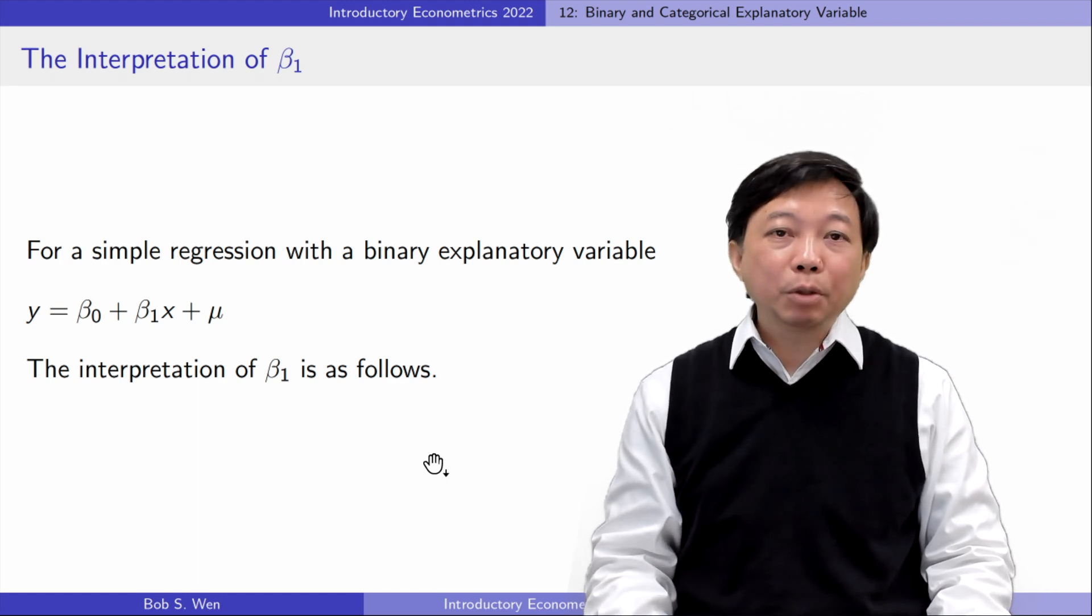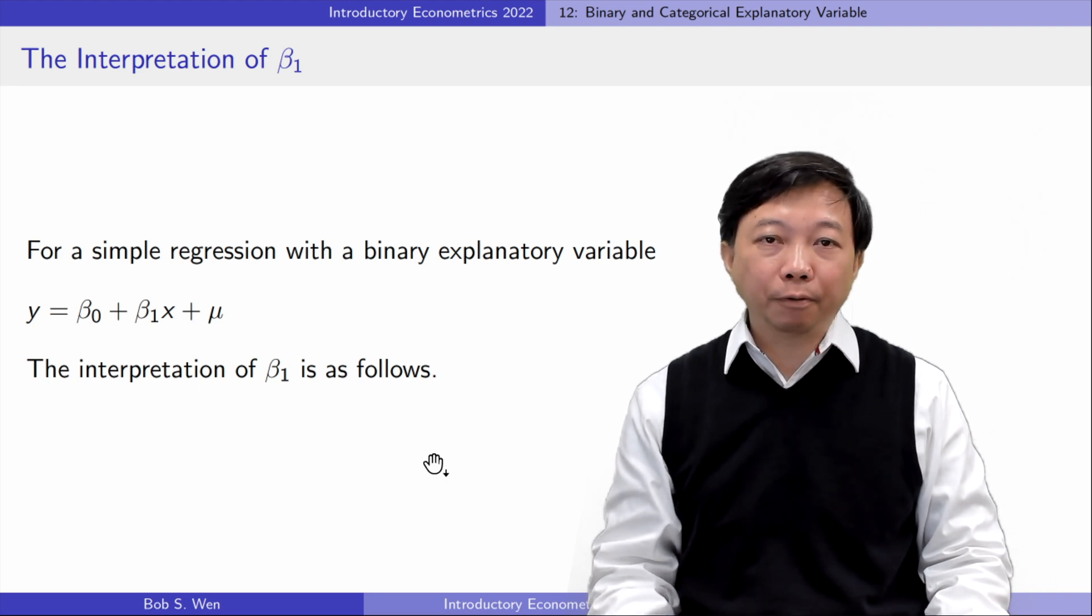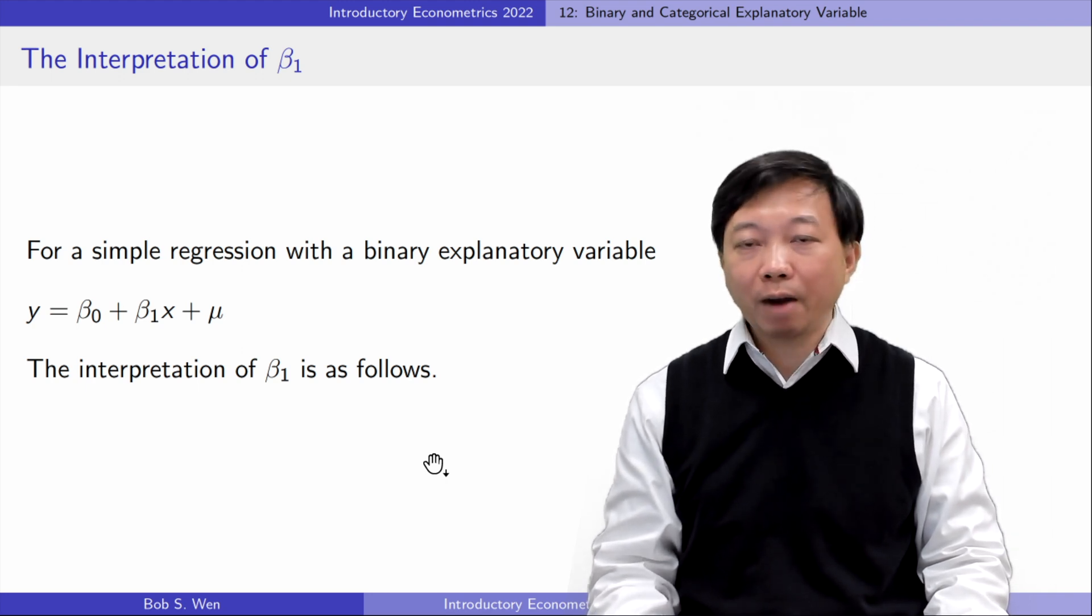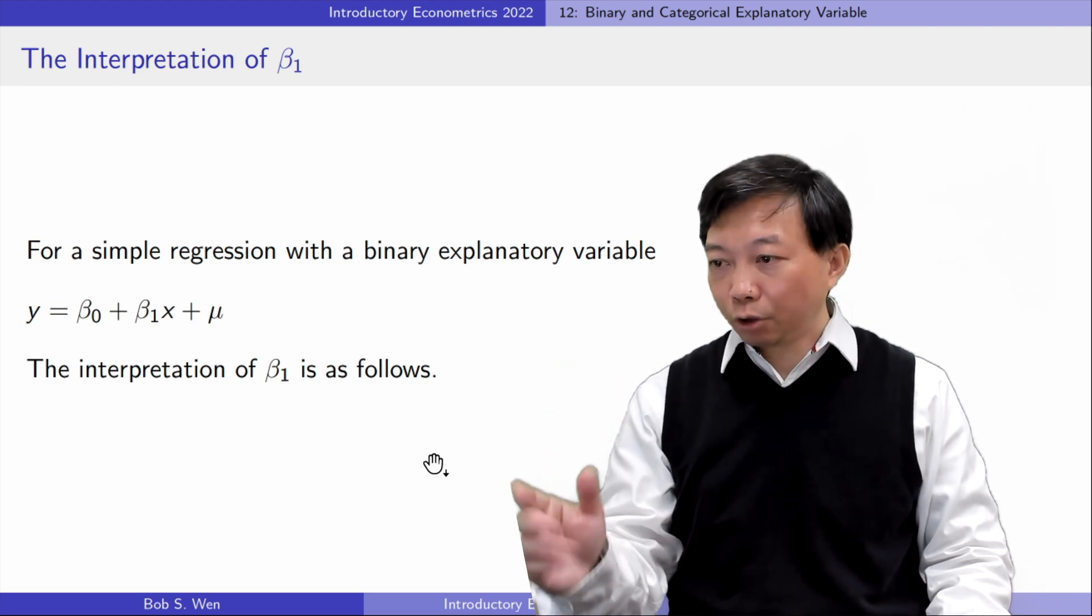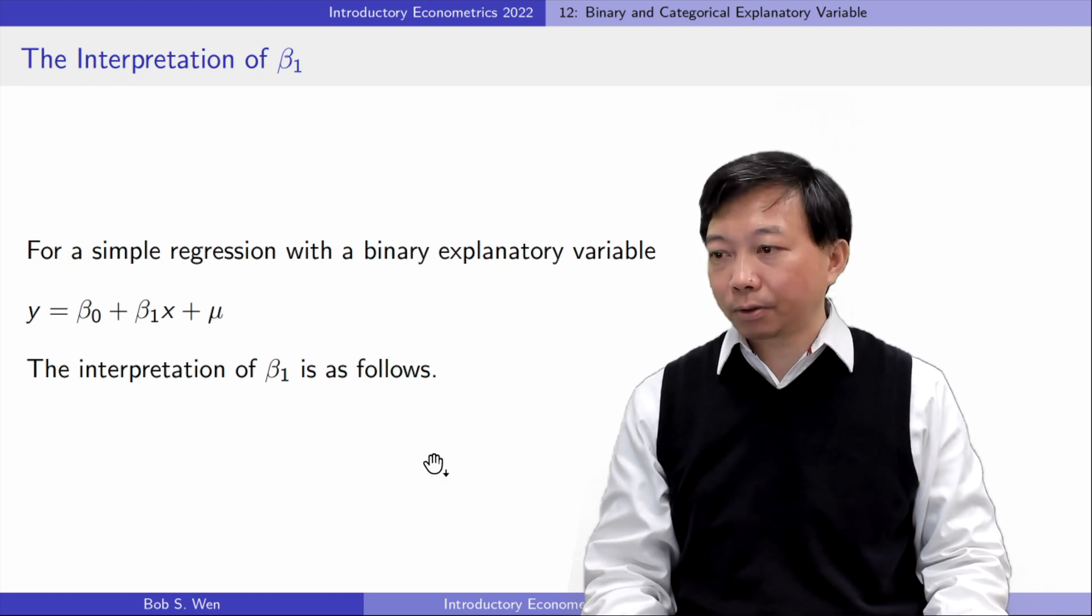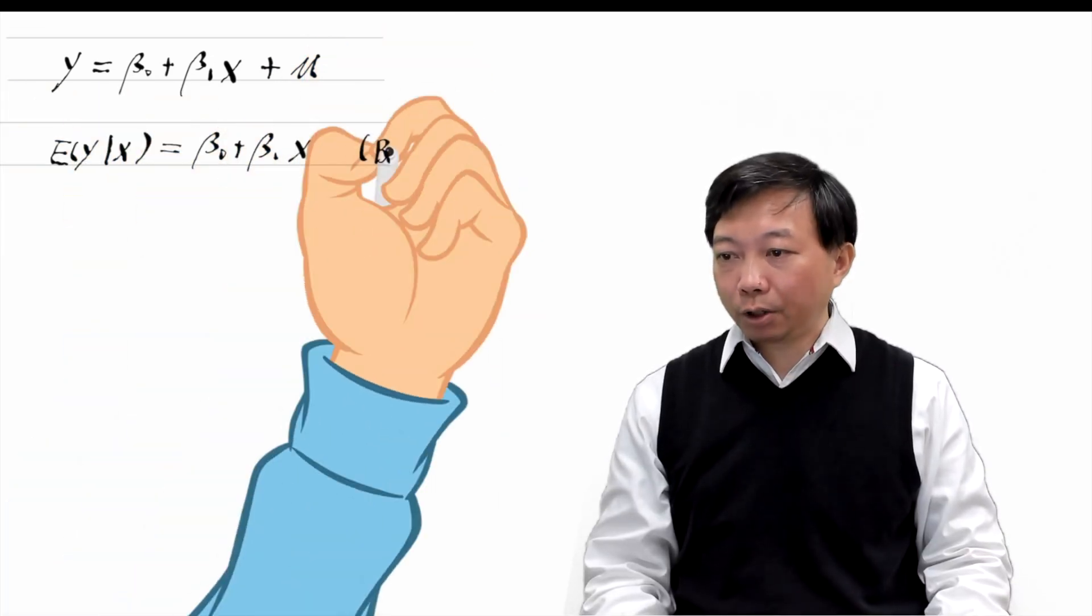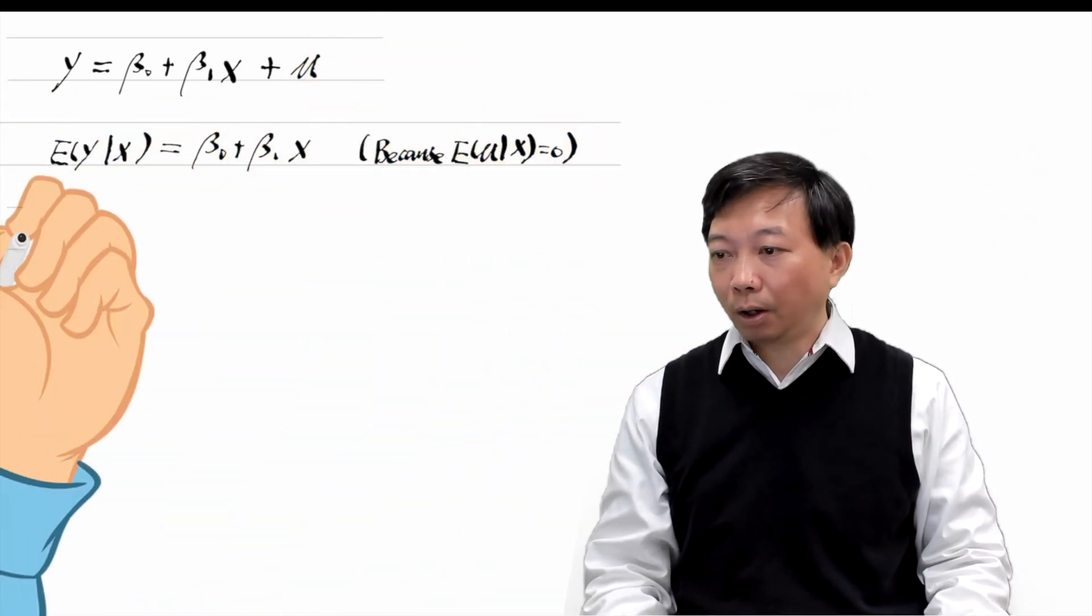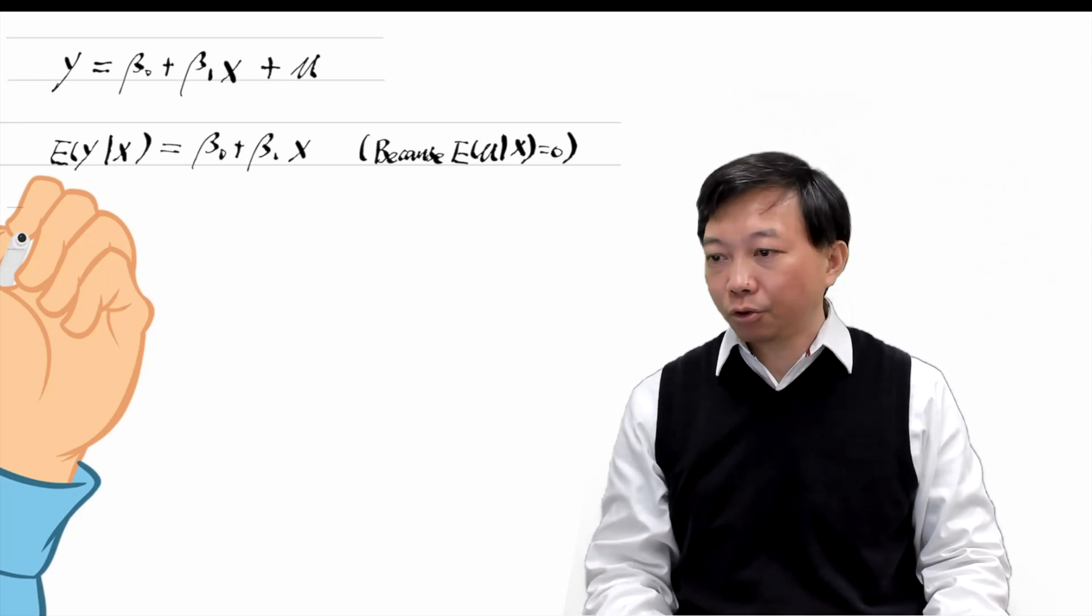Next, let me show you the interpretation of the slope parameter in the context of a binary explanatory variable. I start with the population model y equals beta 0 plus beta 1 times x plus mu. The population average of y conditional on x is a linear function of x because of the zero conditional mean assumption.